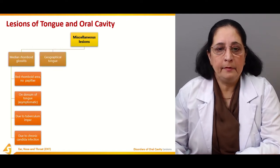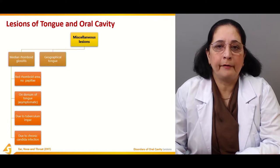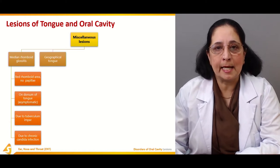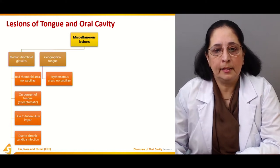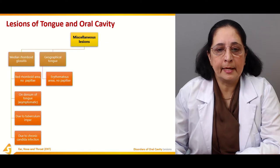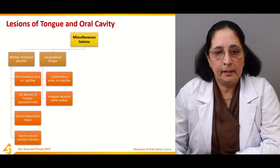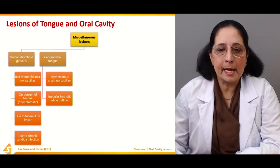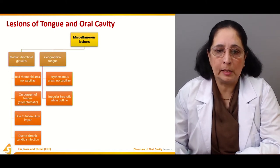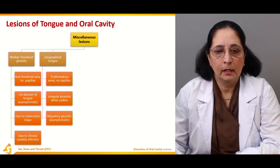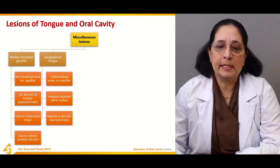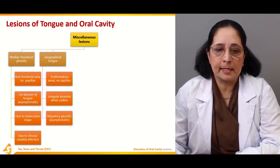Then we have geographical tongue, where there are erythematous areas with no papillae present and an irregular keratotic white outline. This is also known as migratory glossitis, which is asymptomatic.